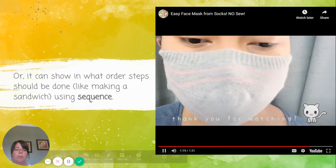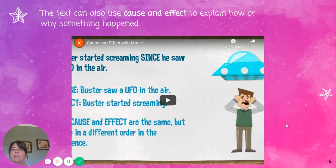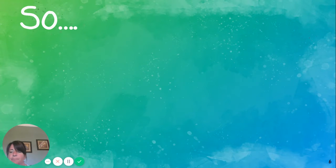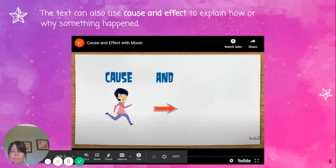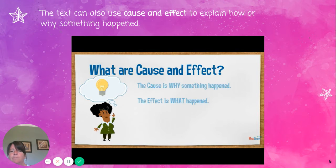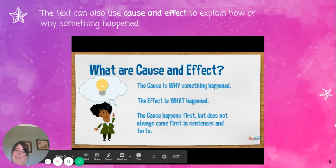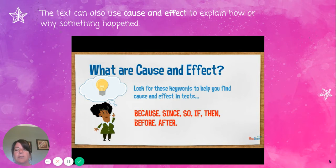Now let's look at the last one — cause and effect. A text can also use cause and effect to explain how or why something happened. The cause is why something happened; the effect is what happened. The cause happens first, but does not always come first in sentences. Look for these keywords to help you find cause and effect: because, since, so, if, then, before, and after. There's the language that we're looking for.